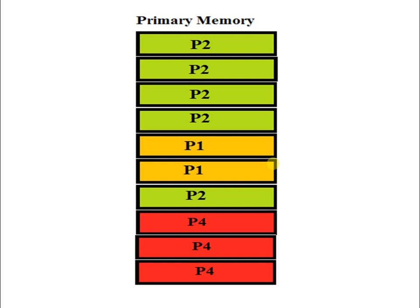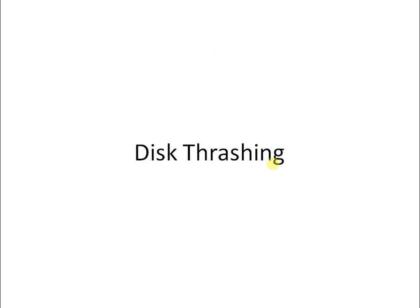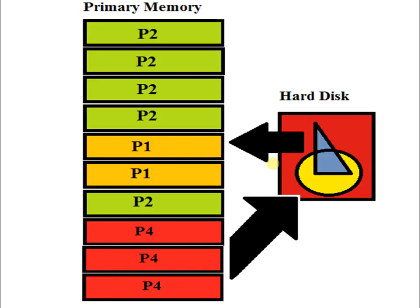A computer can address more memory than the amount physically stored on the system. That extra memory is known as virtual memory, and it is a section of the hard disk set up to emulate the computer's RAM. Moving data in and out from the hard disk to primary memory is known as disk thrashing. Disk thrashing mainly refers to the process of continuously swapping pages between RAM and the hard disk.